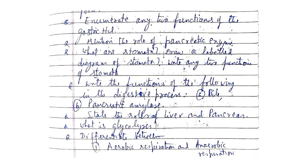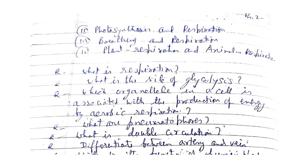Differentiate between aerobic respiration and anaerobic respiration, photosynthesis and respiration, breathing and respiration, plant respiration and animal respiration. What is respiration? What is the site of glycolysis? Which organelle in a cell is associated with the production of energy by aerobic respiration? What are pneumatophores? What is double circulation?